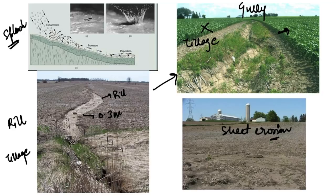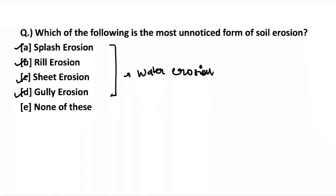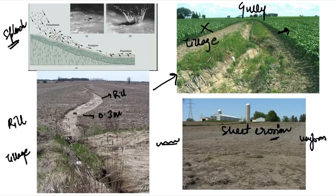The last form of water erosion is sheet erosion. When the movement of a layer of soil happens uniformly due to water runoff or raindrops, it is known as sheet erosion. Due to its uniform nature, it is not noticeable, because the whole layer of soil is removed uniformly. Farmers can identify sheet erosion by observing the accumulation of crop debris at the end of the field.